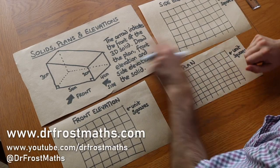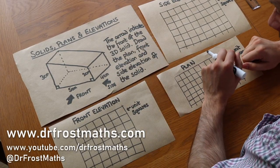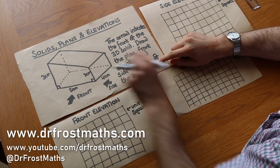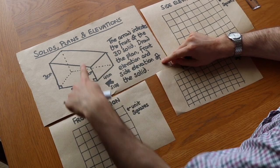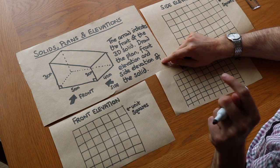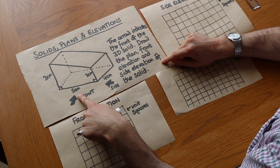Hello and welcome to this Dr Frost Maths video on plans and elevations. We've got this 3D shape here and we usually with these kind of questions denote what the front of the shape is. So where are we standing if we're looking at the front of this 3D solid?